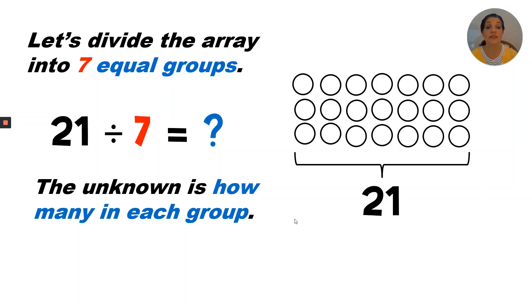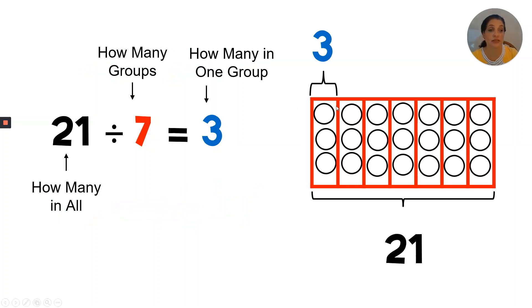Let's divide the array into seven equal groups. The seven equal groups is the number of boxes in the tape diagram — we need seven boxes. So twenty-one divided by seven equals an unknown, and the unknown is how many in each group. We've put boxes around each of the columns. We have seven groups, and one column is how many in one group. So twenty-one divided by seven equals three. I've labeled one column with a bracket and the number three showing how many in each group, and a bracket across the whole tape diagram pointing toward twenty-one — there are twenty-one in all.